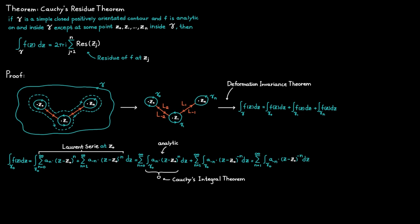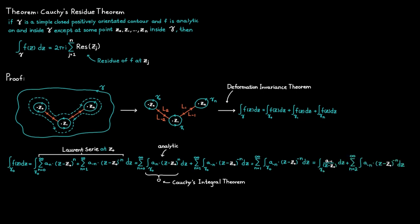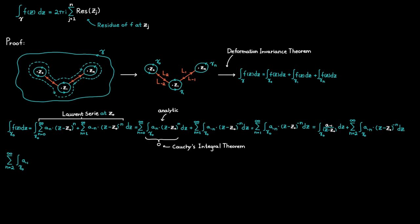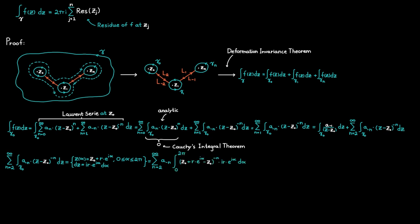The only thing left is to determine the integral over the principal part of the Laurent series. We can do that by again splitting it into two separate integrals, this time taking out the term n = -1 from the principal part. We can determine the last integral by using parametrization, since contour gamma 0 is a circle centered around C0 with some radius r. We parametrize it accordingly, where the angle alpha goes between 0 and 2π.